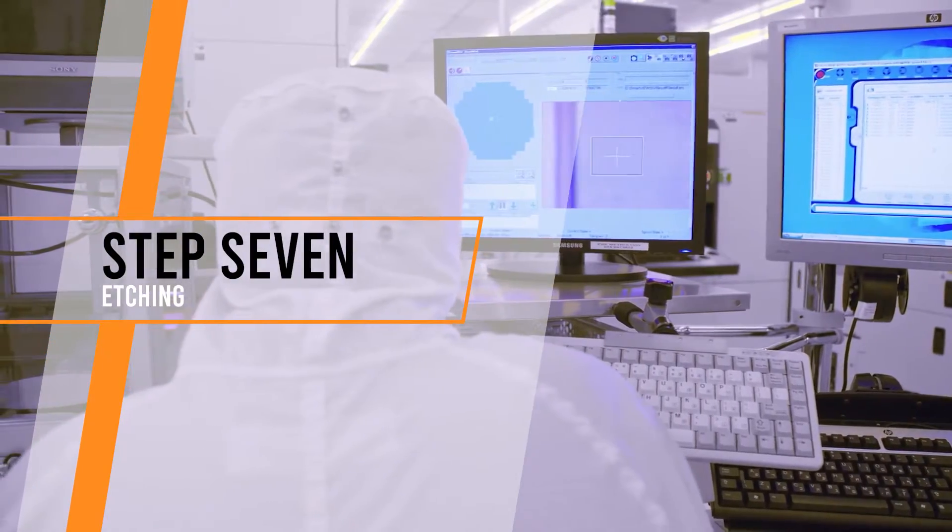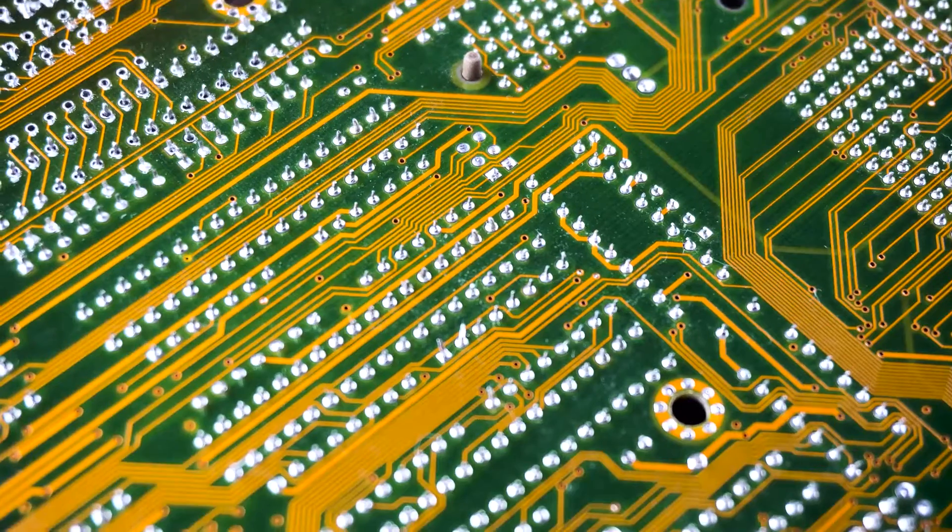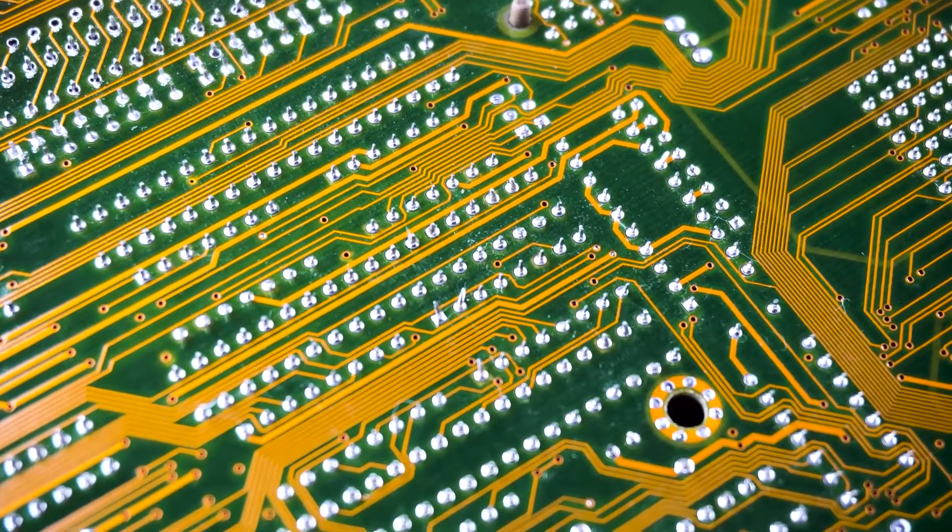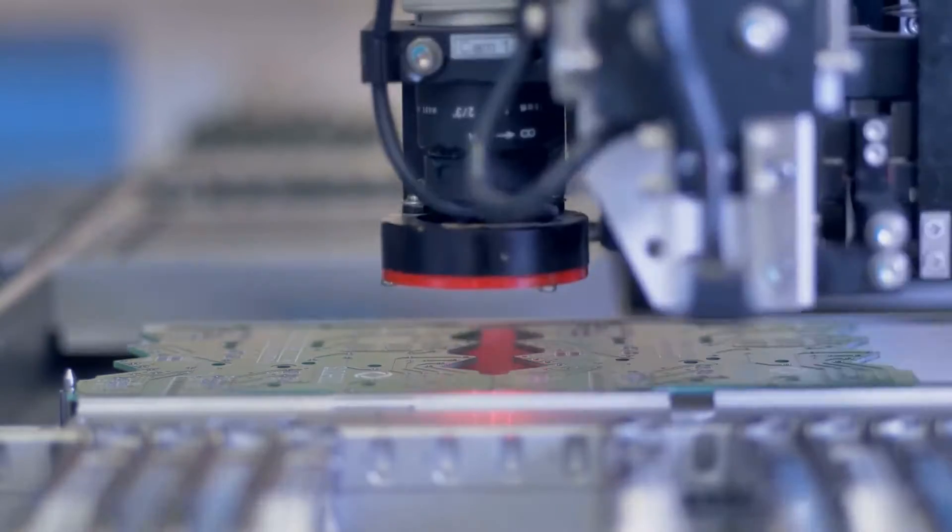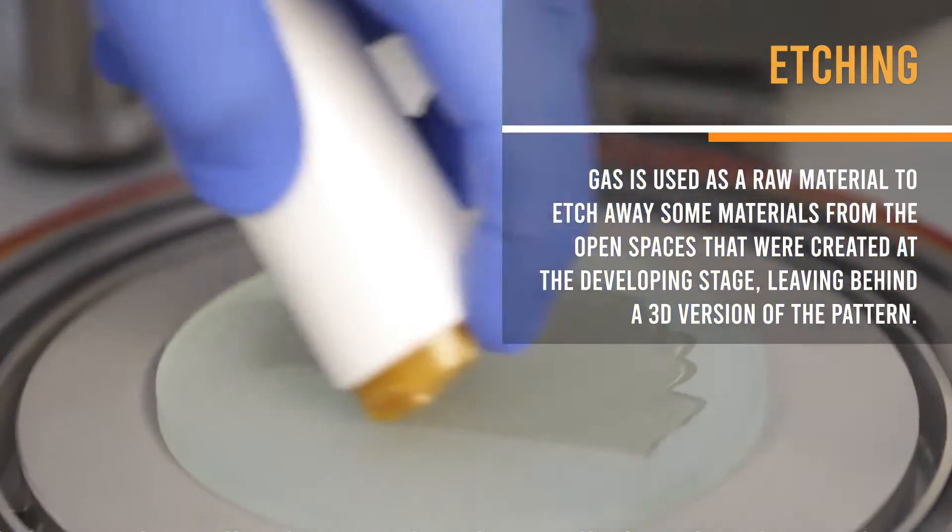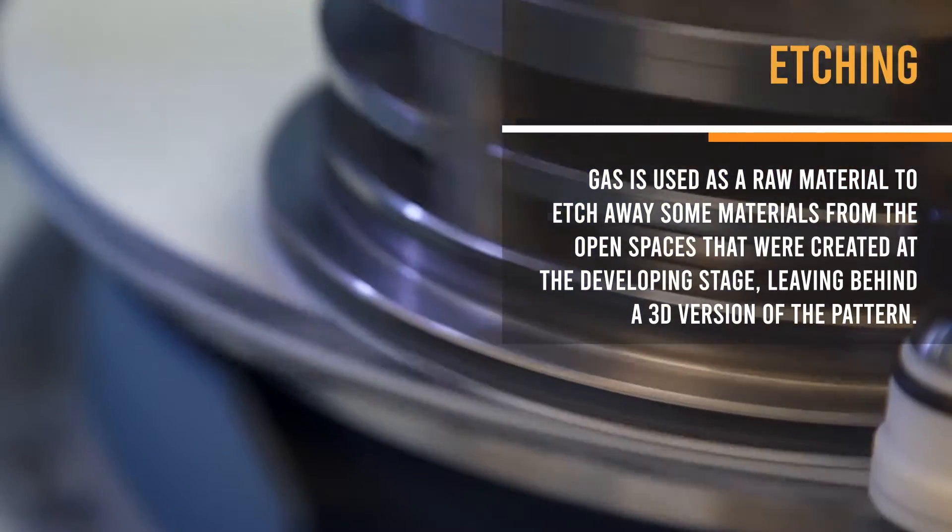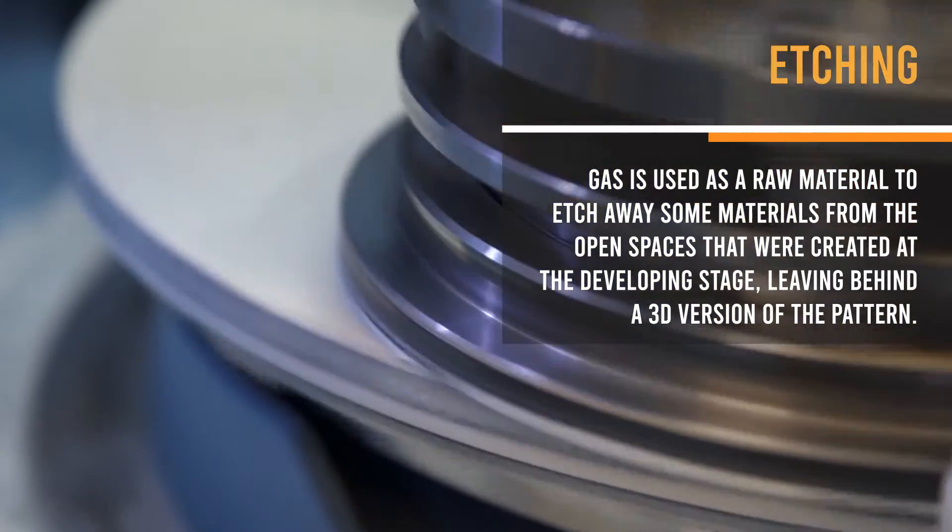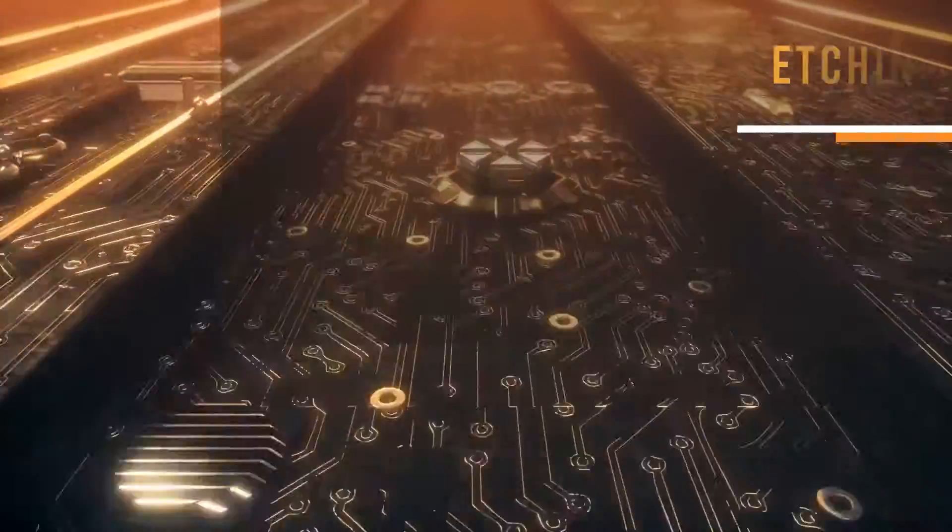Step 7. Etching. This is the seventh step involved in the making of microchips. It is used during microfabrication to take away layers from the wafer during the manufacturing of microchips. In this process, gas is used as a raw material to etch away some materials from the open spaces that were created at the developing stage, leaving behind a 3D version of the pattern.